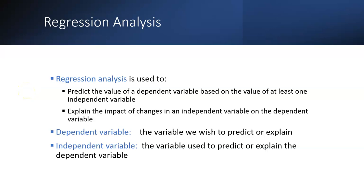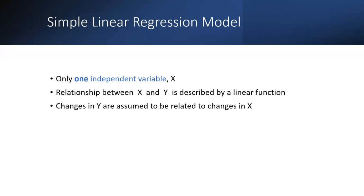This is the second part of regression analysis in machine learning. As we discussed, there are two important variables in regression analysis: the dependent variable and the independent variable. The dependent variable is on the left-hand side of the equation, while the independent variable is on the right side. We predict the dependent variable with the help of the independent variable, along with some parameters and an error term.